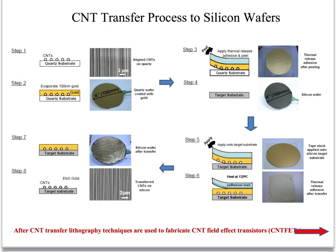Then we apply the tape onto a target silicon substrate and heat it up to 120 degrees Celsius. The thermal release tape is specially designed to lose its adhesion at 120 degrees Celsius. We are then left with the nanotubes and the gold layer on top of the target substrate. We etch the gold by wet etching, and then we are left with the CNTs on the target substrate, and we go ahead and fabricate transistors using lithographic techniques.